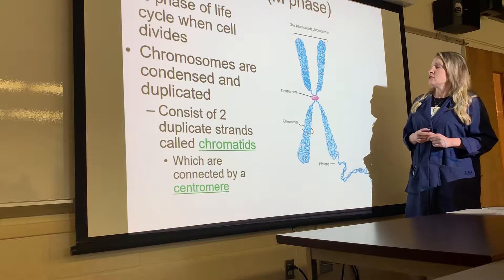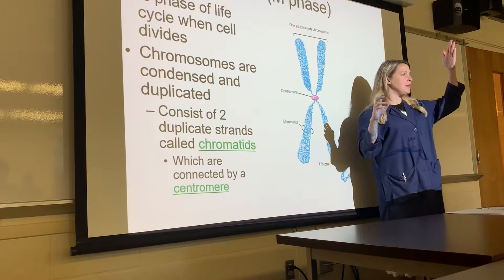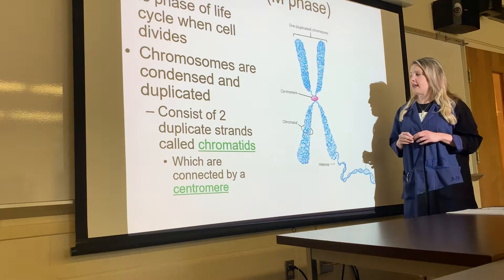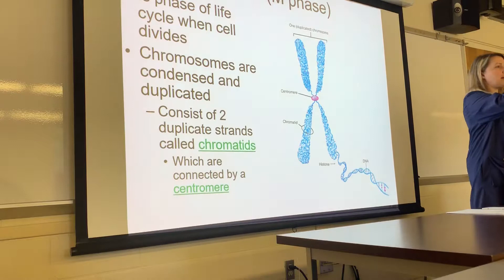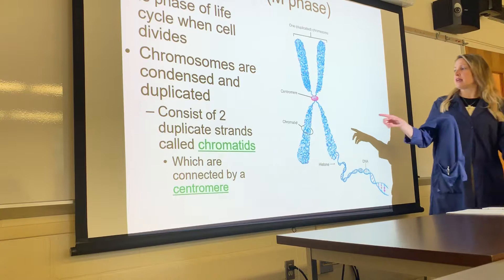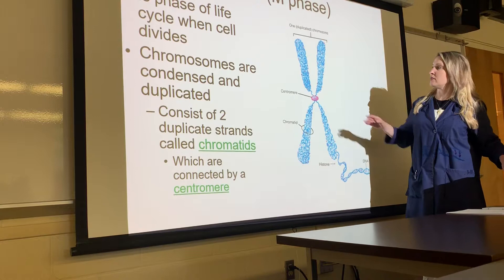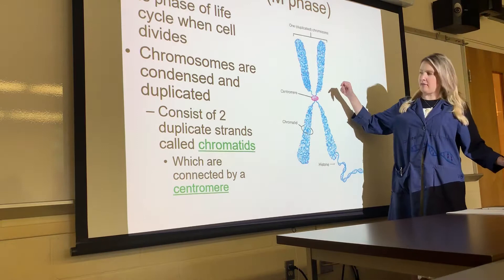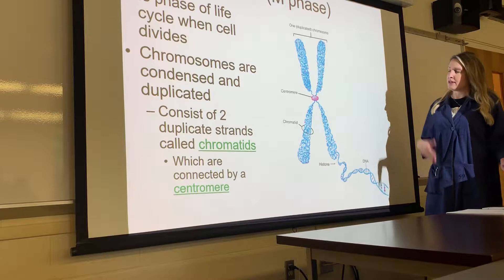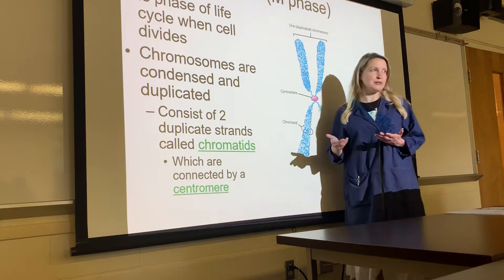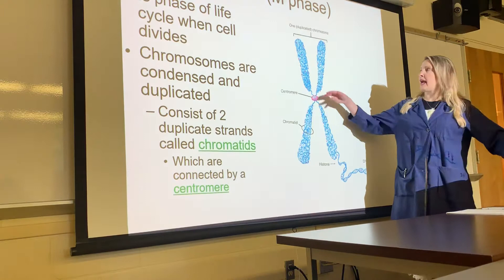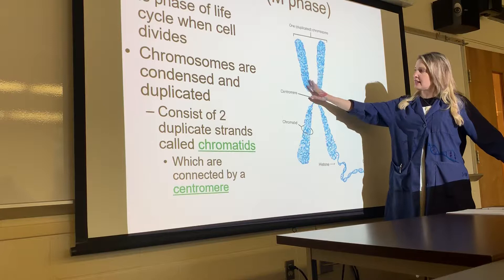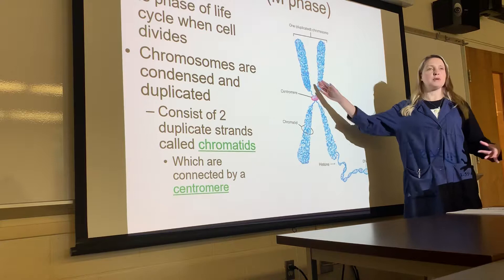In the S phase, we make a complete copy of every chromosome. Each chromosome copies itself, and the two copies — say the two first chromosomes — stick together by way of a sticky protein called a centromere. These are called sister chromatids. Sister chromatids are genetically identical — one is the original chromosome attached to its replica. They are held together by the centromere.